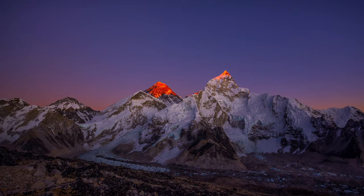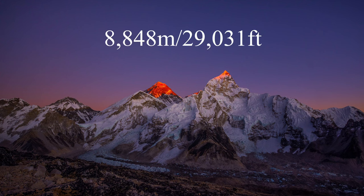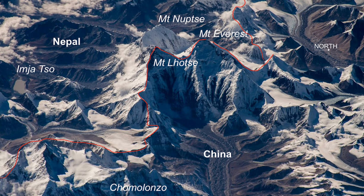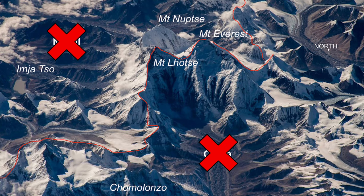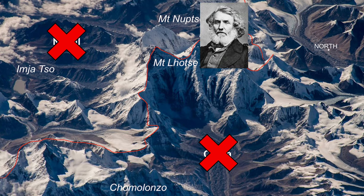Mount Everest, with an elevation of 8,848 meters or 29,031 feet, is Earth's highest mountain above sea level and one of the most famous mountains in the world. But as many might not know, the China-Nepal border runs across its summit point, and thus Everest is shared by both China and Nepal. Yet the mountain does not bear a name that relates to either country, and instead is named after a British man named Sir George Everest. This raises a simple question: why?